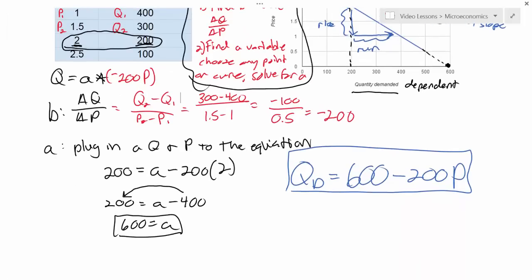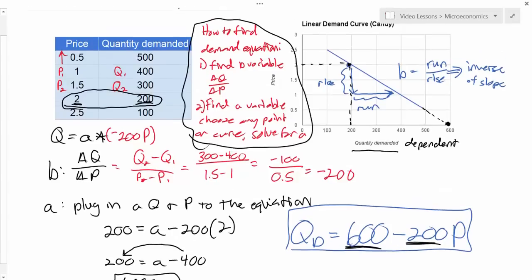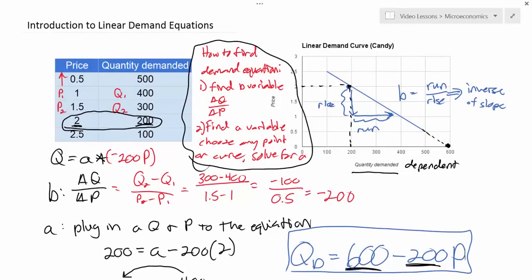In future lessons, we'll talk about the factors that can cause a change in the a variable or a change in the b variable and how that will affect the shape or the position or the slope of the demand curve. Here we go.